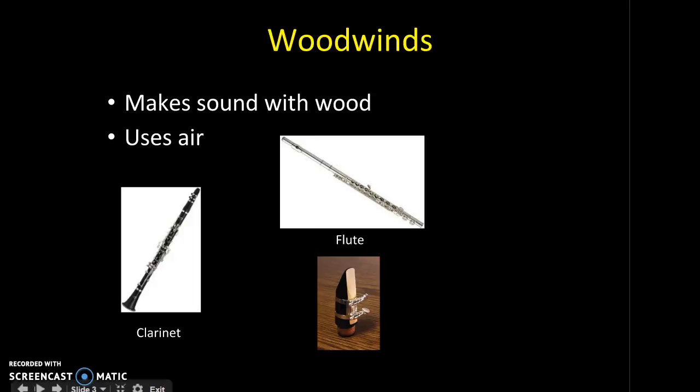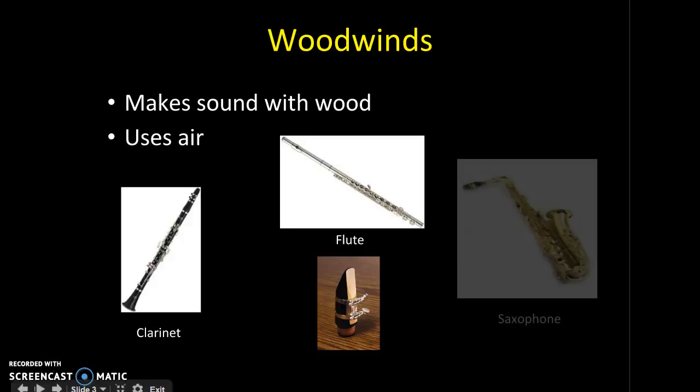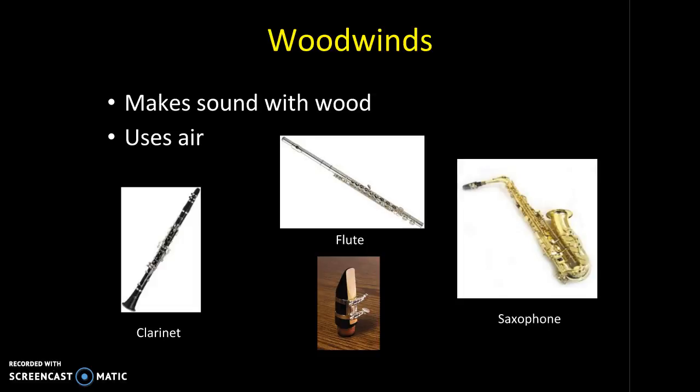The last instrument that I would like to show you in the woodwind family is the saxophone. The saxophone also uses a reed. Most of the saxophone is a metal type but because it uses a reed it is considered a woodwind. Here is what a saxophone sounds like.